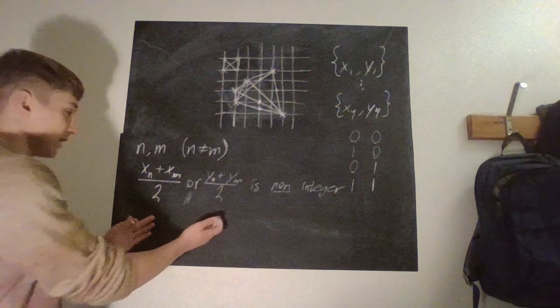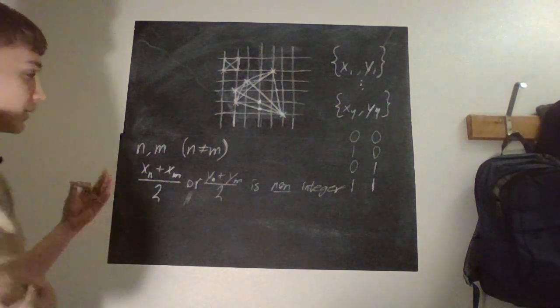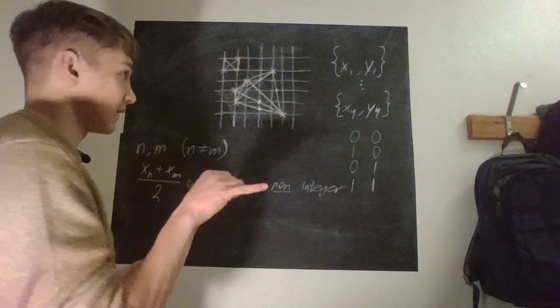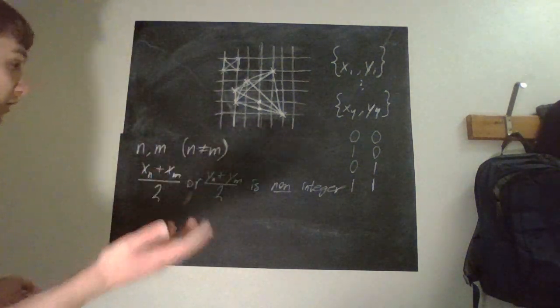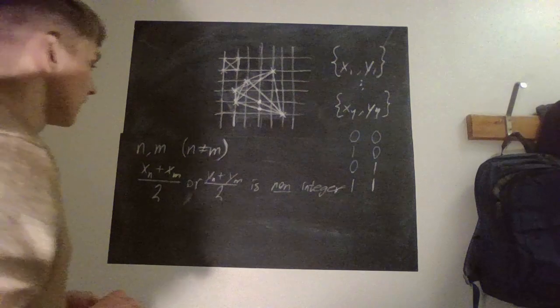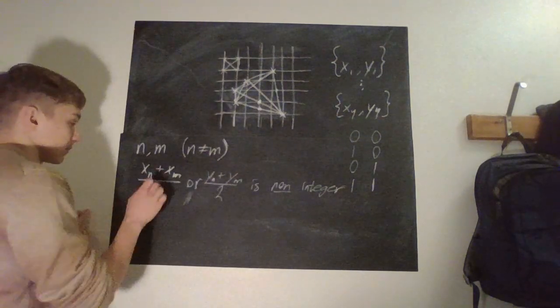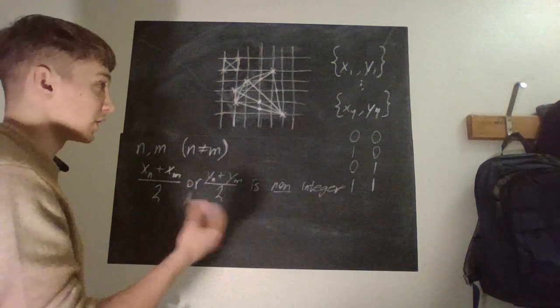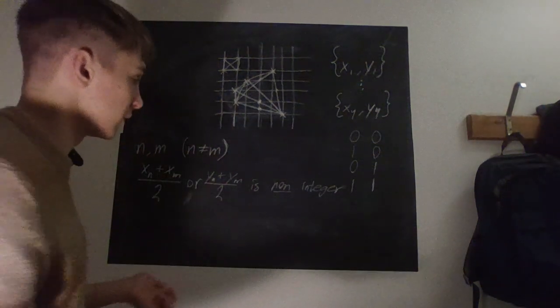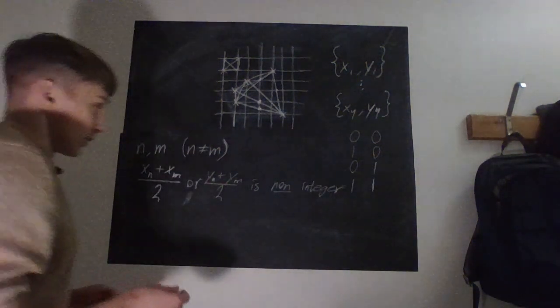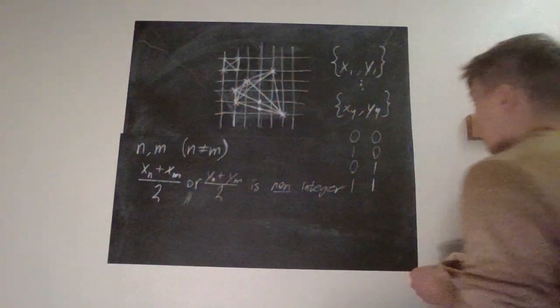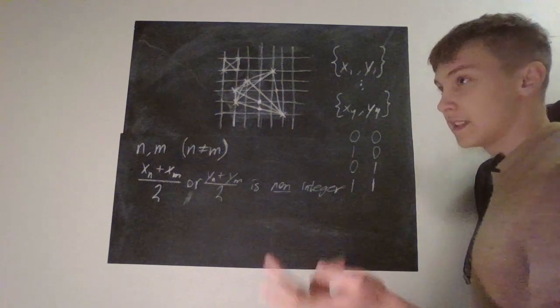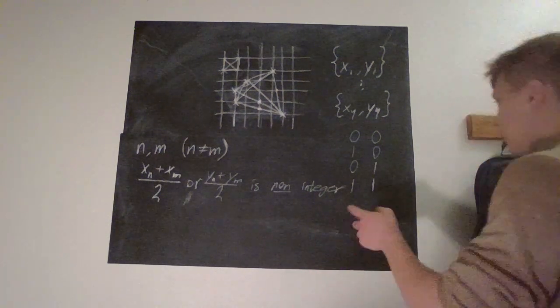We know that this is what determines the midpoint, and we want one of them to be a non-integer if the midpoint on the line segment is not on a junction. And therefore, because this is something plus something over two, we can just split this up into modulus two, or if the coordinates are divisible by two or not.